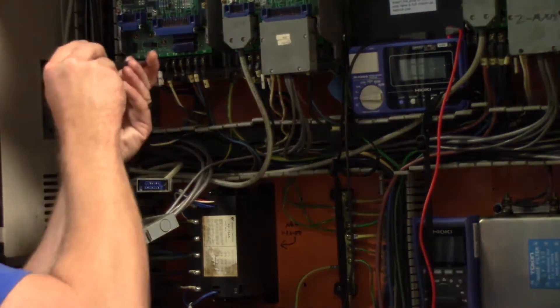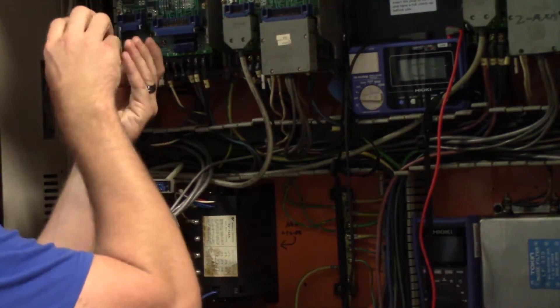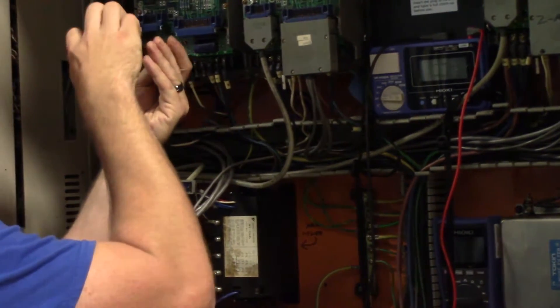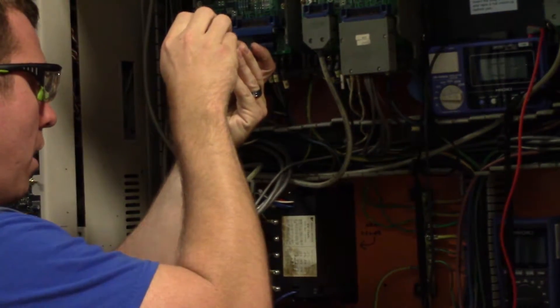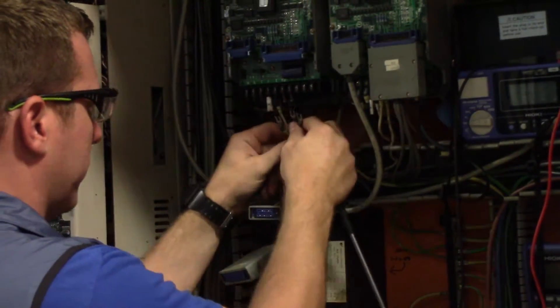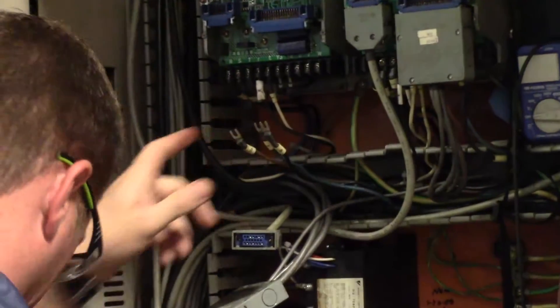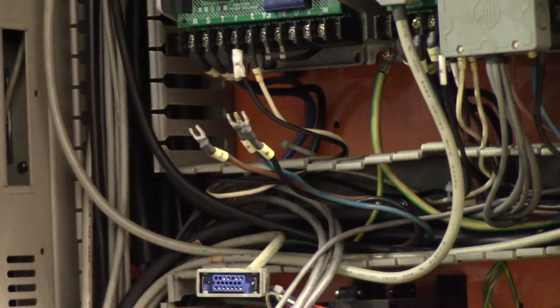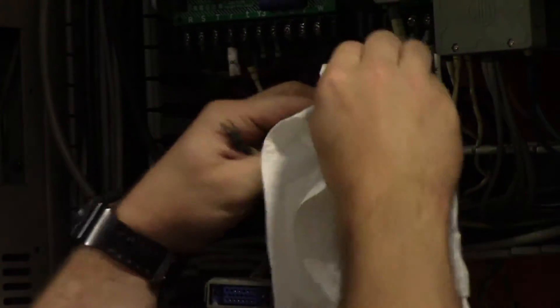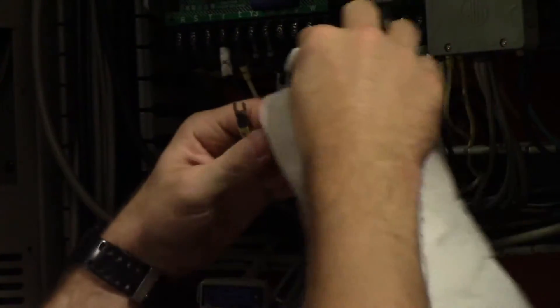So let's go ahead and unhook UV and W. If your wires aren't labeled make sure you label them now. You don't want to play a guessing game on which one is which. We want to clean these terminals up, make sure we get any grease, grime, or dust off of them.